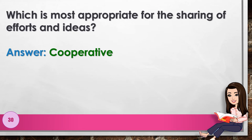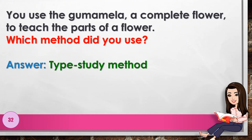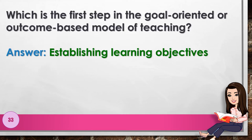Number 28: To teach students to explore, which should you use? Answer: discovery. Number 29: Which is least exploratory in nature? Answer: demonstration. Number 30: Which is most appropriate for the sharing of efforts and ideas? Answer: cooperative learning. Number 31: The use of a planetarium to show the arrangement of planets with their rotation and revolution around the sun is an example of a teaching strategy called blank. Answer: simulation.